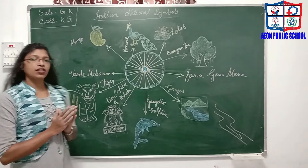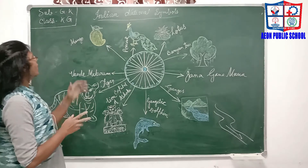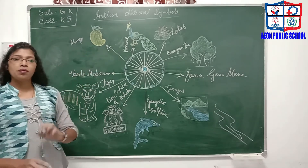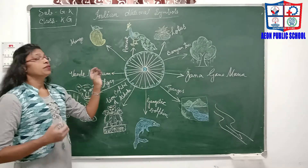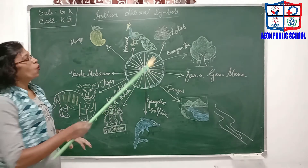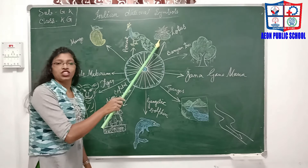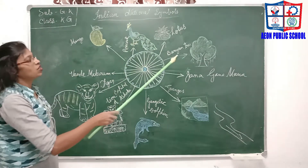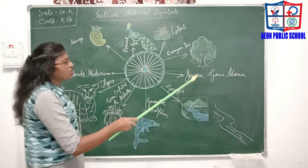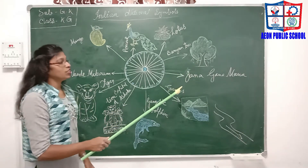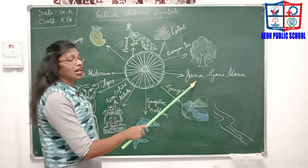Now let's do some questions on national symbols. What is our national fruit? The answer is Mango. What is our national bird? Peacock is our national bird. What is our national flower? Lotus is our national flower. What is our national tree? Banyan Tree is our national tree. What is our national anthem? Jana Gana Mana is our national anthem.